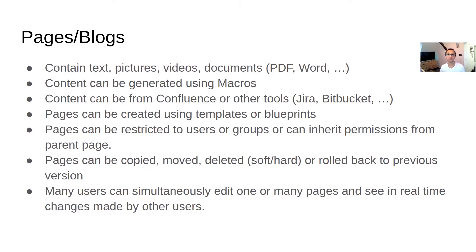You can restrict permissions on a space so only certain users can access it, and within that space you can further restrict access to certain pages — for example, only three specific users can see page A and all sub-pages beneath it. Pages can be copied, moved, and deleted, but note that deleting a page in Confluence is a soft delete — it won't be permanently removed. The space administrator manages soft-deleted pages and decides whether to permanently delete or restore them.